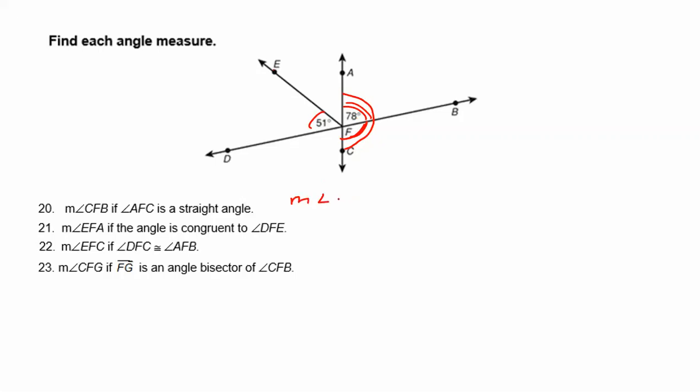Measure of angle AFB, which we know is 78, plus the measure of angle CFB, which we don't know, that's what we're trying to find, will be equal to the whole line, which is going to be 180 degrees, but I'm going to write AFC.